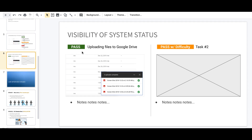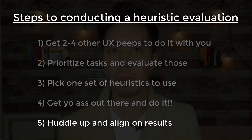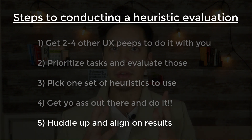Step five: once everybody has done it on their own, come back together and compare your answers. Compare what you found — was this a pass? Was it a fail? Did you all find the same thing? Hash it out and discuss it together.